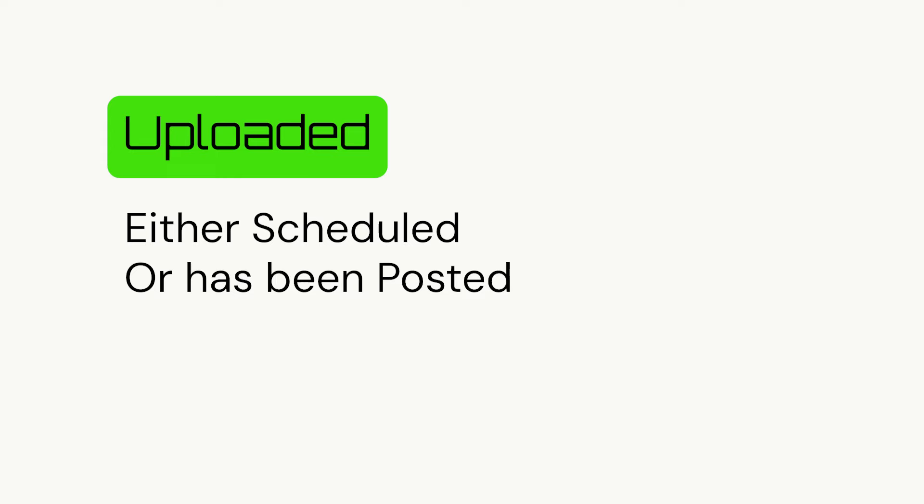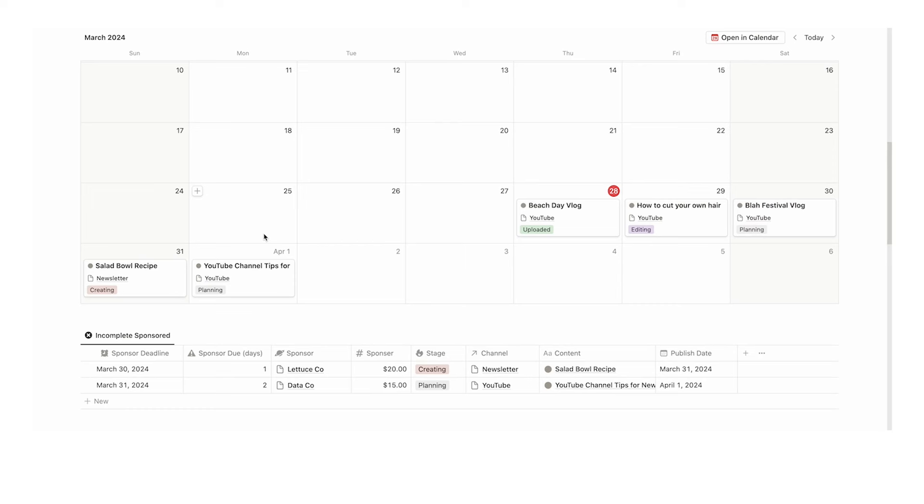Under the 'all content' view, it looks slightly different. In this view we don't want to see as much information — just the piece of content, the channel it's being posted on, and the stage. 'Uploaded' and 'scheduled' mean the same thing in the system — it basically tells us this is a piece of content you don't have to worry about; it's been sorted and posted. I'll add in a few more pieces of content to show how the rest of the system works.